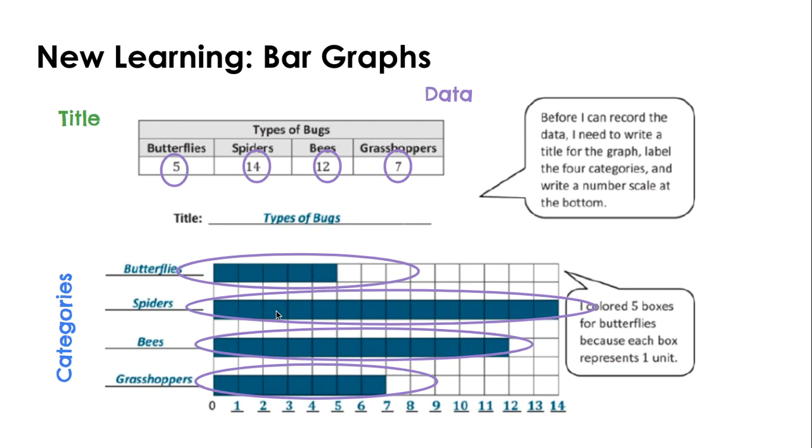1, 2, 3, 4, 5, 6, 7, 8, 9, 10, 11, 12, 13, 14 spiders, so on and so forth. So the data stacks up in the bar graph.